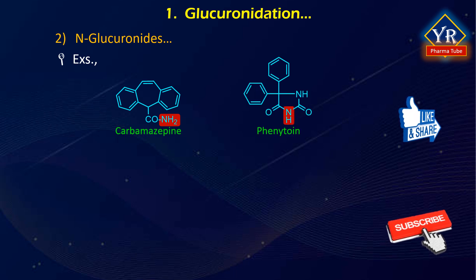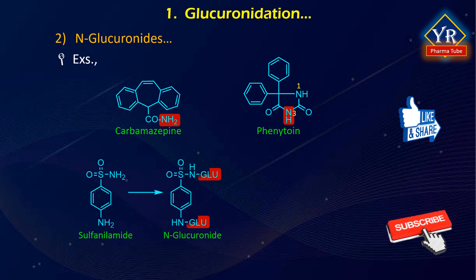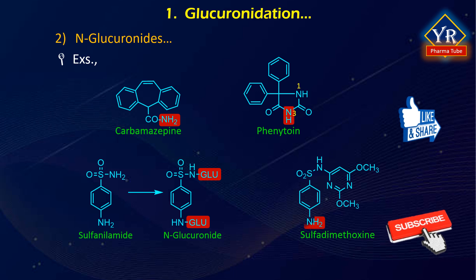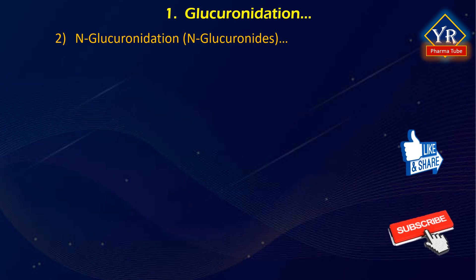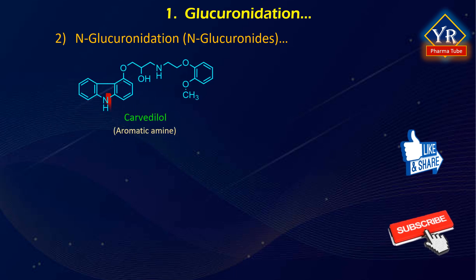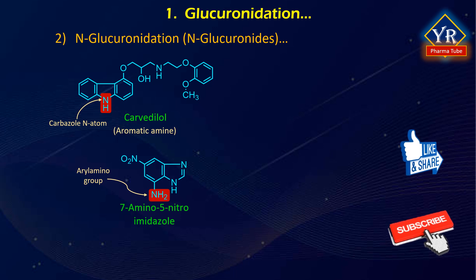In phenytoin, N-glucuronidation was found to occur at N3. The reaction has special significance for sulfonamides, and particularly antibacterial sulfonamides such as sulfadimethoxine, since it produces highly water-soluble metabolites that show no risk of crystallizing in the kidneys. N-glucuronidation of aromatic amines has been observed in very few cases only, for example conjugation of the carbazole nitrogen in carvedilol. Another example is 7-amino-5-nitroimidazole.